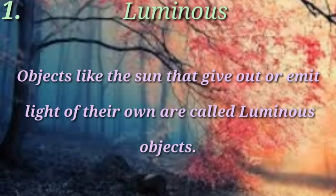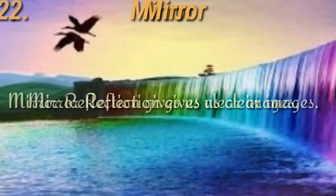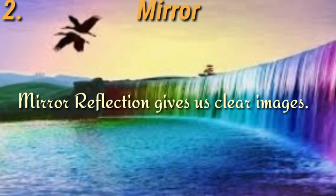First, luminous. Objects like the sun that give out or emit light of their own are called luminous objects. Second, mirror. Mirror reflection gives us clear images.